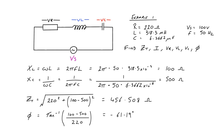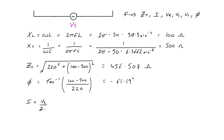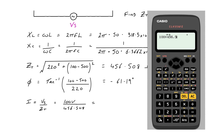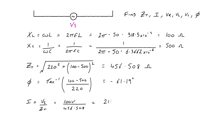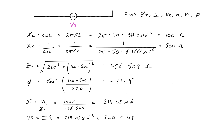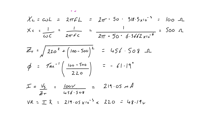The current is V over Z, which is 100 volts divided by the impedance of 456.508 ohms, and that is 219.05 milliamps. There's only one current in this circuit because it's a series circuit. The resistor voltage is I times R, which is 219.05 milliamps times 220 ohms, giving 48.19 volts across the resistor. That's in phase with the series current, of course, from the phasor diagram.